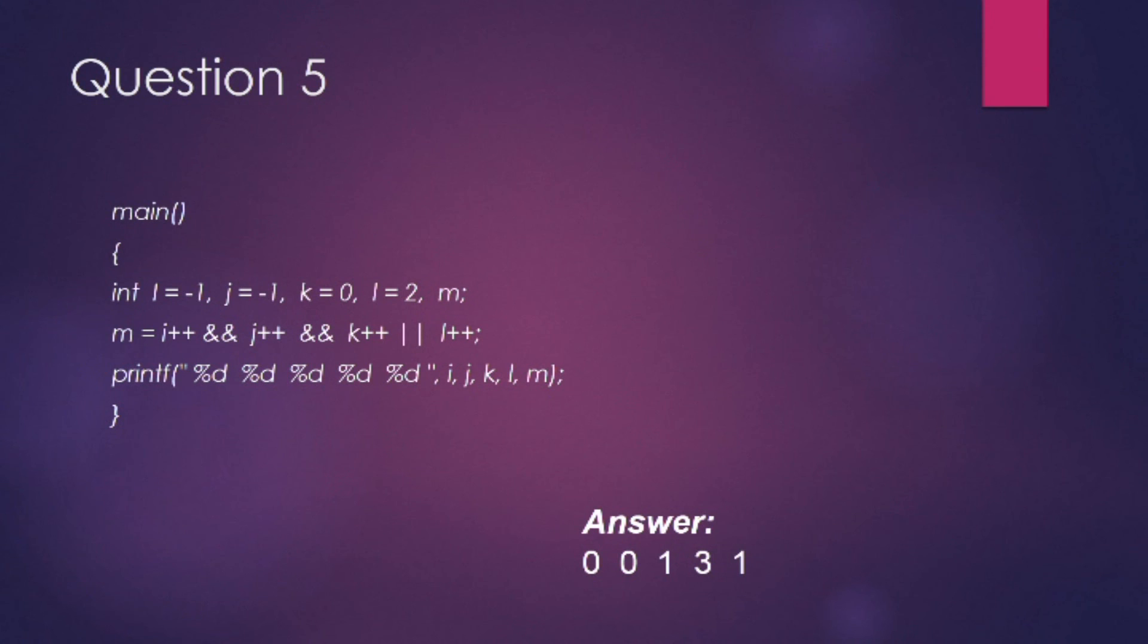The logical AND operator (&&) has higher priority over the logical OR operator. So the expression i++ && j++ && k++ is executed first. The result of this expression is 0, that is -1 && -1 && 0 equals 0. Now the expression 0 || 2 evaluates to 1 because the OR operator always gives 1 except for the 0 || 0 combination, for which it will give 0.